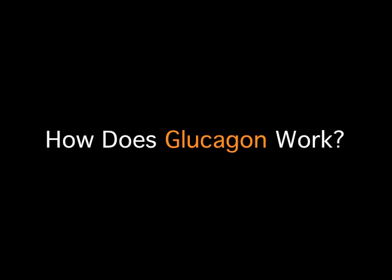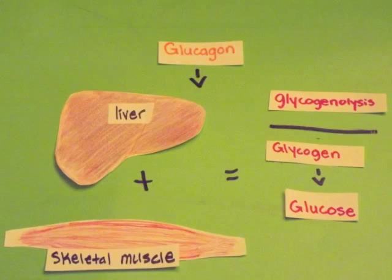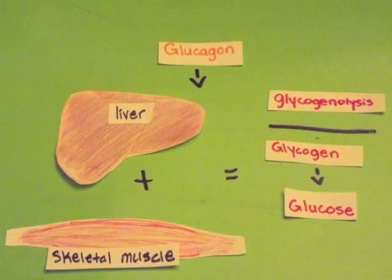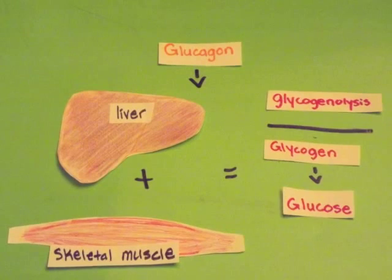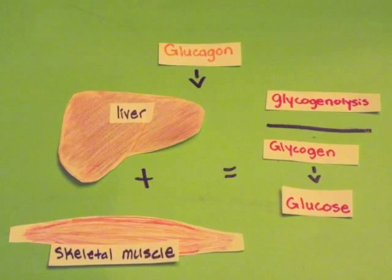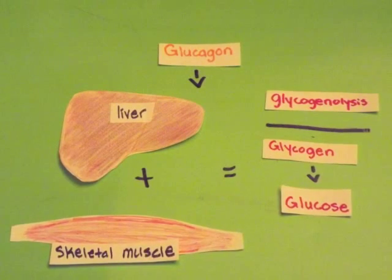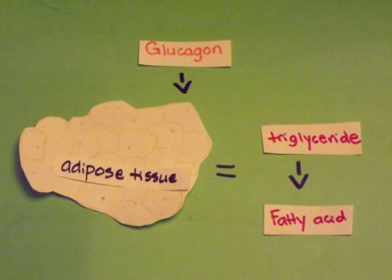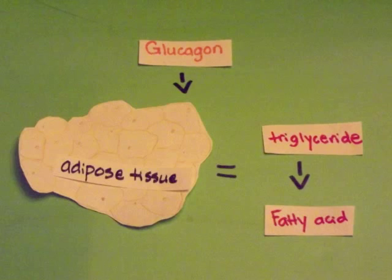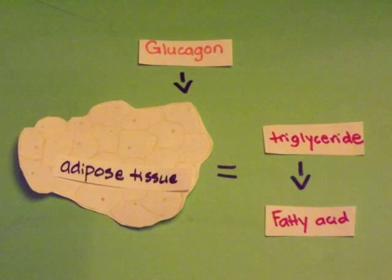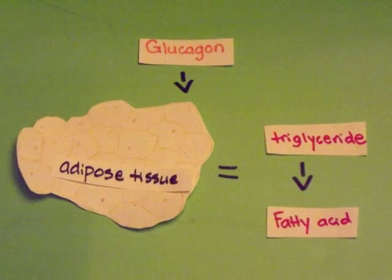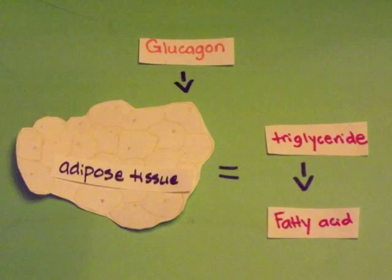Glucagon works by reducing glucose use in the body and releasing that glucose into the bloodstream. Glycogenolysis, the breakdown of glycogen to glucose, is stimulated in skeletal muscle and liver cells. The breakdown of triglycerides into fatty acids in adipose tissue is also stimulated.